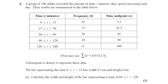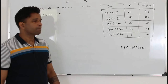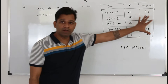Question number four: a group of 100 adults recorded the amount of time T minutes they spend exercising each day. The results are summarized in the table below. A histogram is drawn to represent these data. The bar representing the time interval zero to less than 15 has width 0.5 centimeter and height 6 centimeters. Part A: calculate the width and height of the bar representing the time interval 60 to less than 120. This question carries three marks.